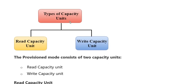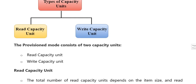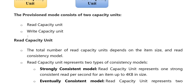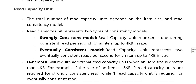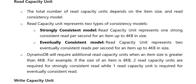Yahan pe types hain capacity units: first read aur second write. Provisioned mode divide kiya gaya hain read aur write me. Read capacity unit — total number of read capacity units depend kari hain size, rate, consistency model. Read capacity unit represent kari hain two types of consistency models: first strongly aur second eventually.